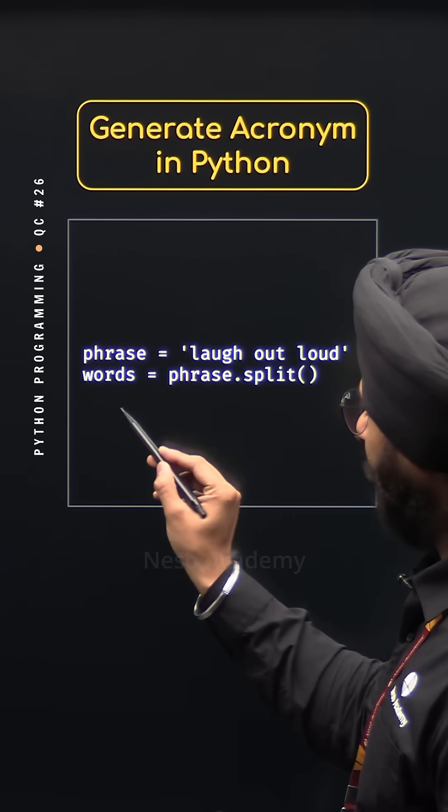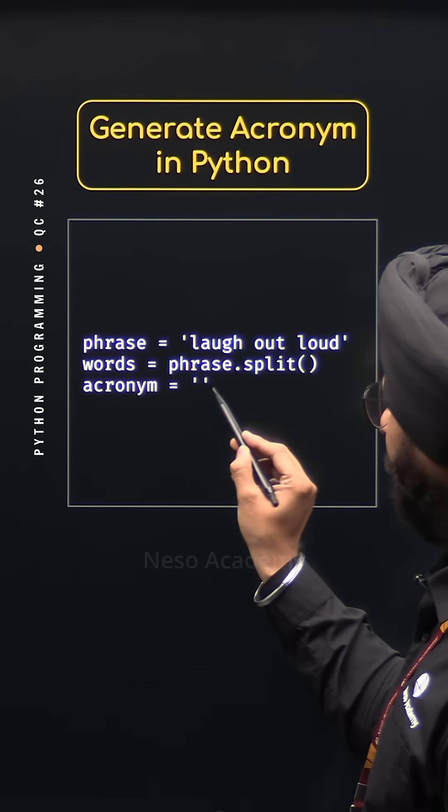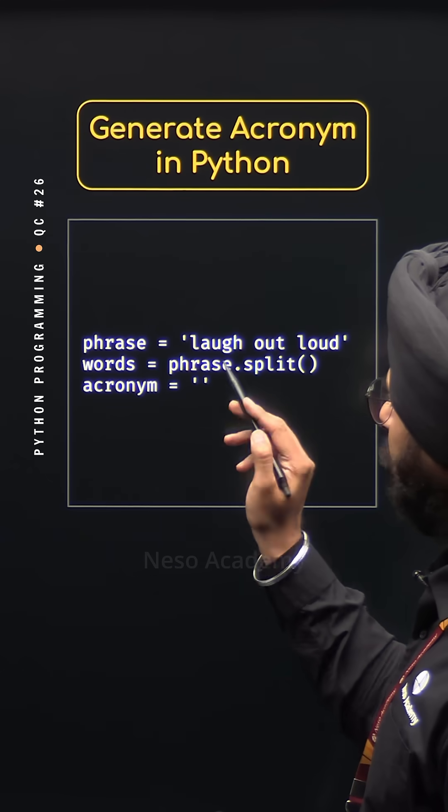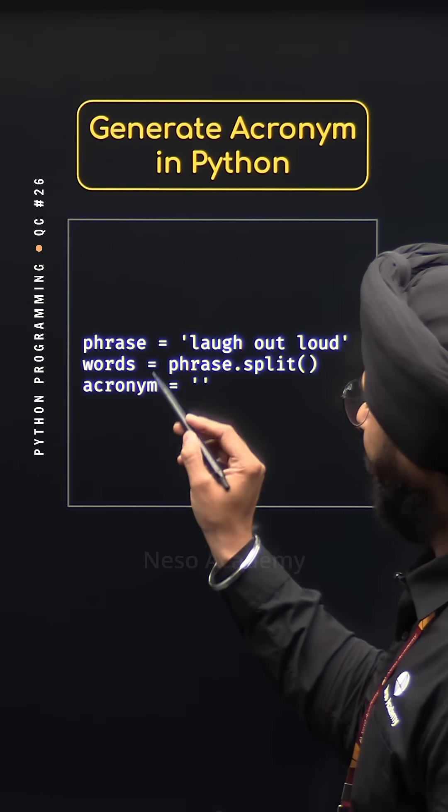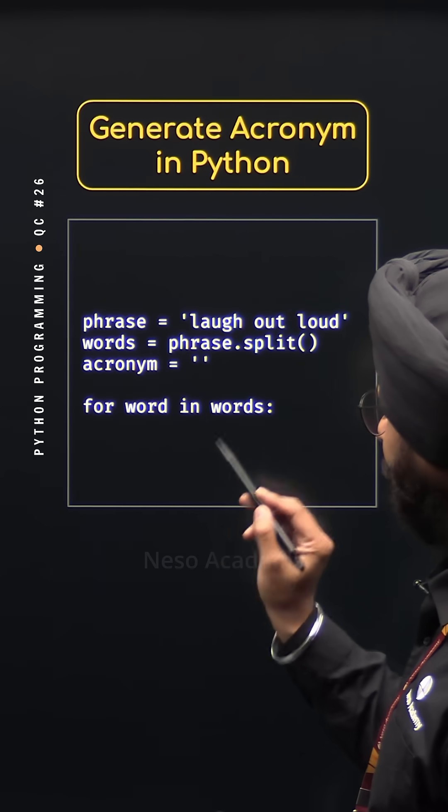Now, we need to define acronym variable with this empty string. After this, we need to define a for loop which will help us access each word from the words list, like this.